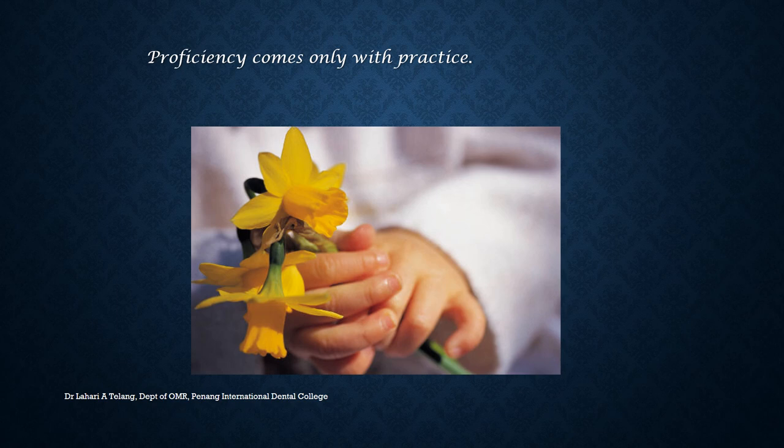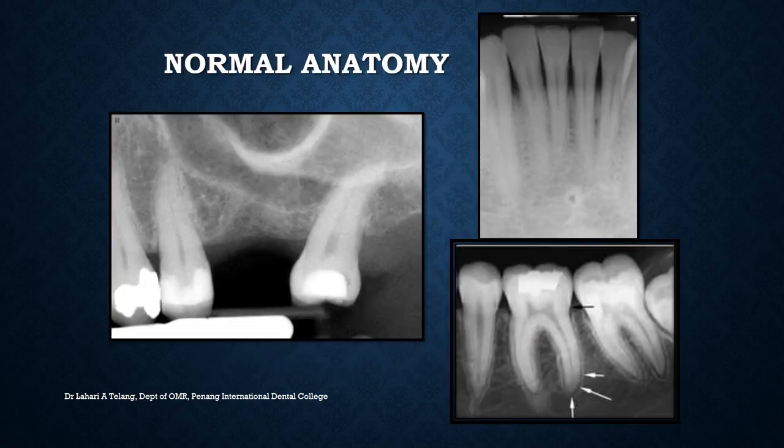Proficiency comes only with practice, which is very true for radiographic interpretation — the more radiographs you see, the more likely you are to interpret them with confidence. Let's look at some normal anatomy that could mimic radiographic appearances. Keep in mind how the maxillary region, mandibular anterior region, and mandibular posterior region look. The arrows here point to the CEJ and lamina dura, and the lingual foramen — anatomy that must be understood before analyzing any area.